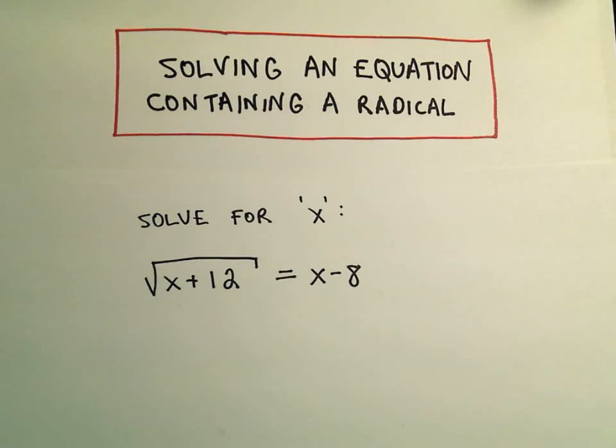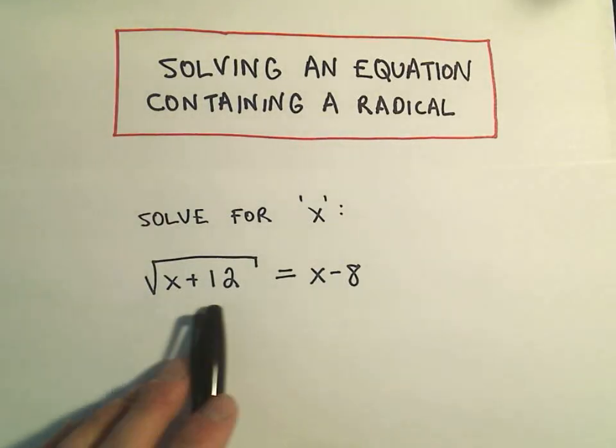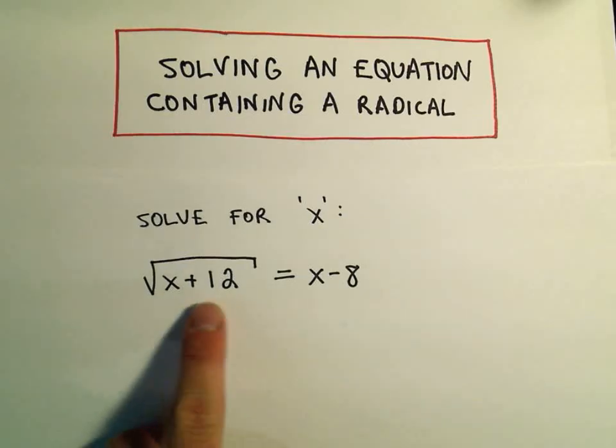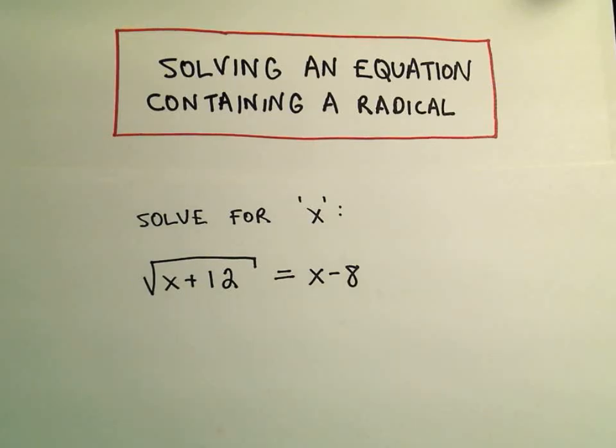Alright, in this video I want to solve an equation that involves a radical or more specifically a square root. So typically the process on equations where you have radicals, especially if you have multiple radicals, you always isolate one of them and then to get rid of a square root we square both sides.